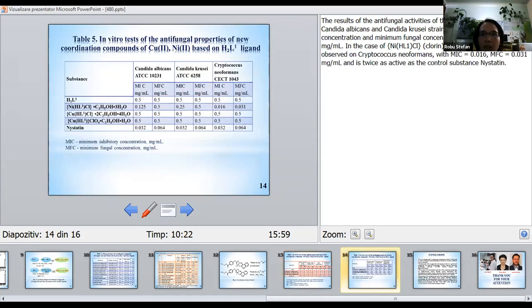The results of antifungal activity of the synthesized compounds on Candida albicans and Candida krusei strains, minimum inhibitory concentration and minimum fungicidal concentration are in the range of 0.125 to 0.5 milligrams per milliliter.